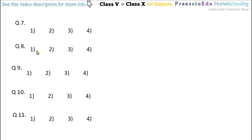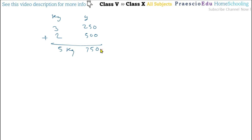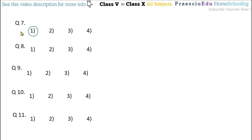Question number 7: Snehal bought 3 kg 250 grams of tomatoes and 2 kg 500 grams of peas. What is the total weight of vegetables? Adding: 3 kg + 2 kg = 5 kg and 250 grams + 500 grams = 750 grams. So total is 5 kg 750 grams, given in option number 1.